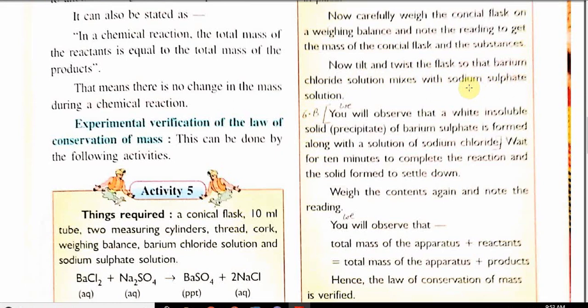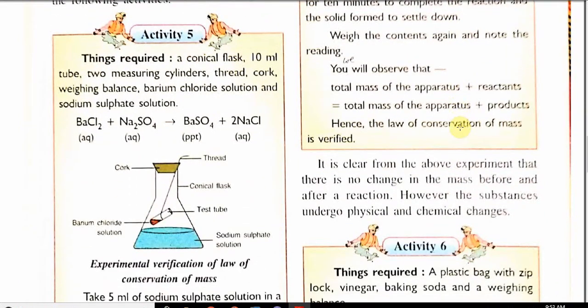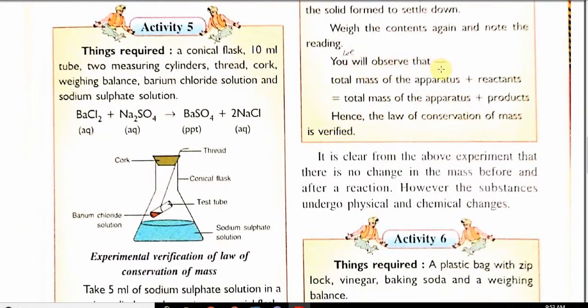After some time you will see reaction starts and there is a white insoluble precipitate. Sodium sulfate is converted to sodium chloride and barium chloride converted to barium sulfate. Now again take the measurement of mass. You will observe the total mass of apparatus plus reactant is equal to total mass of apparatus plus product. If you cancel the apparatus from both sides, mass of reactant is equal to mass of product. It verifies the law of conservation of mass.